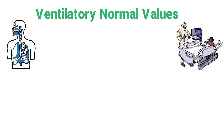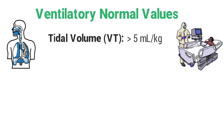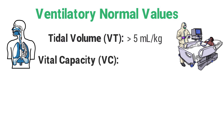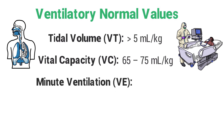First, we have the tidal volume, which should be greater than 5 milliliters per kilogram. The normal vital capacity should be between 65 and 75 milliliters per kilogram. The normal minute ventilation should be between 5 to 8 liters per minute.